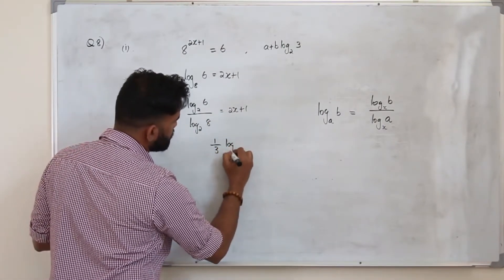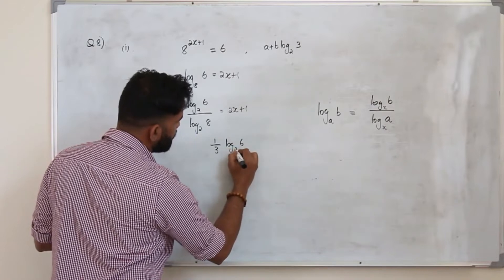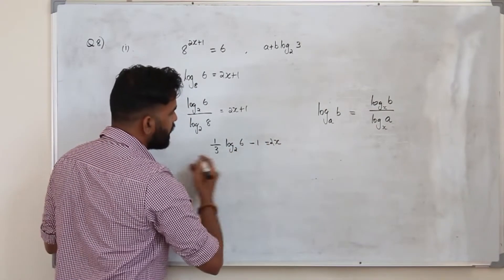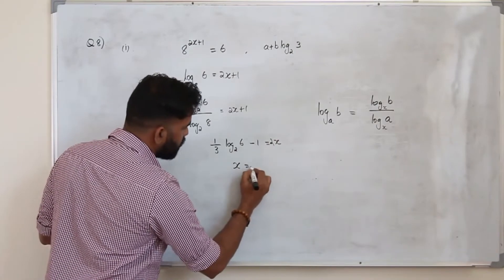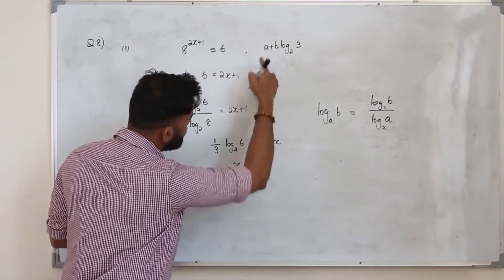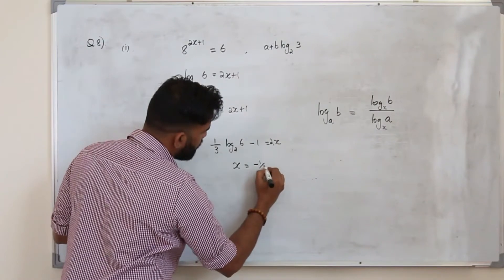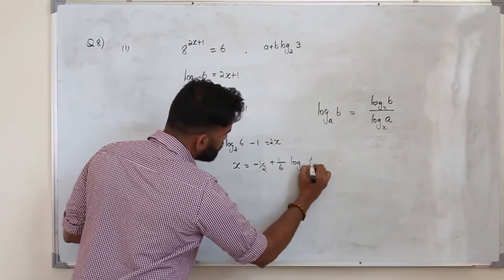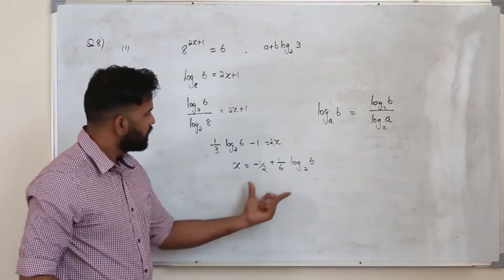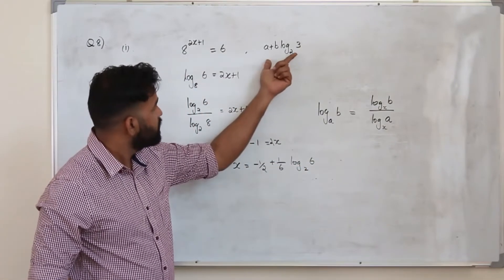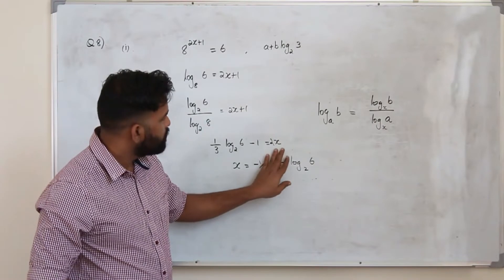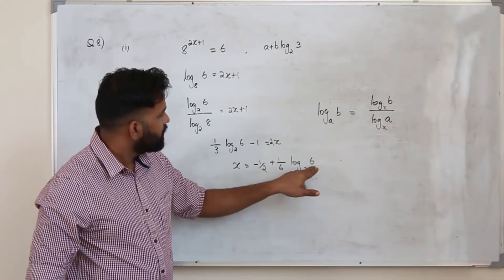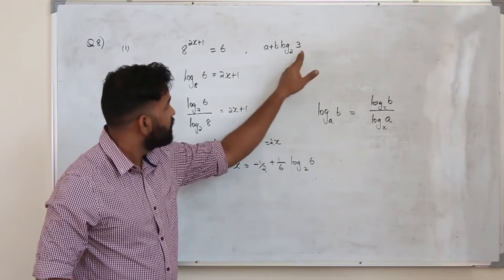So you get 1 over 3 times log 6 to the base 2 minus 1 equals 2x. Divide everything by 2, so x equals minus 1 over 2 plus 1 over 6 log 6 to the base 2. This looks like the required form A plus B log, but we are not supposed to have log 6 — we need log 3.